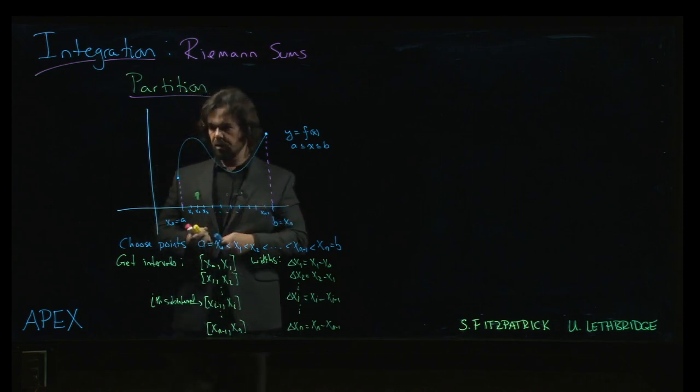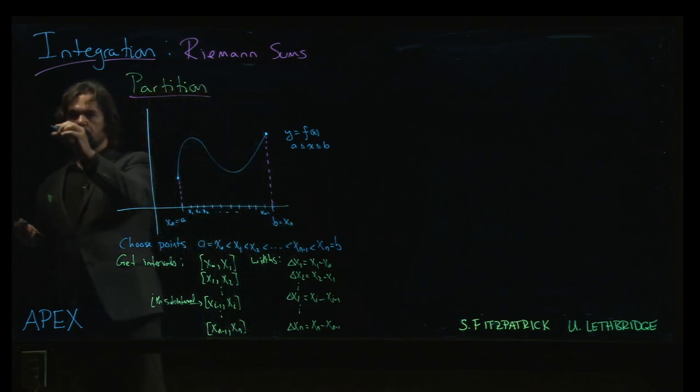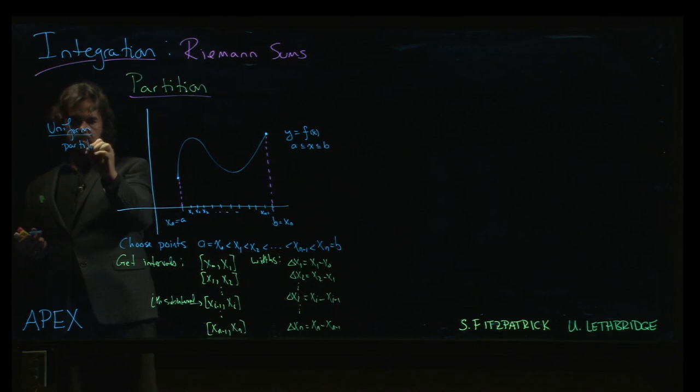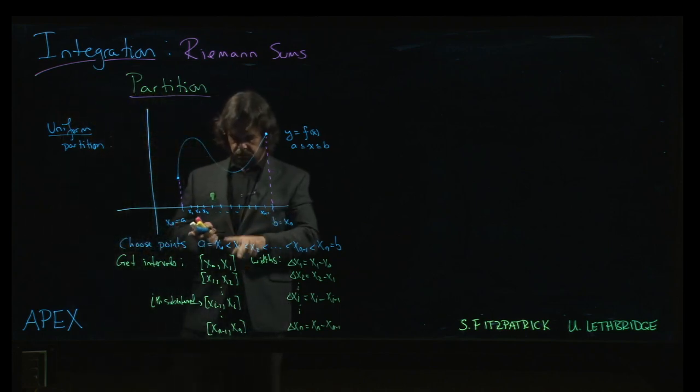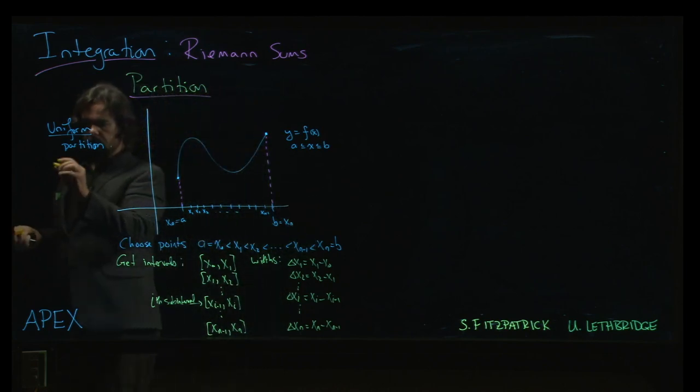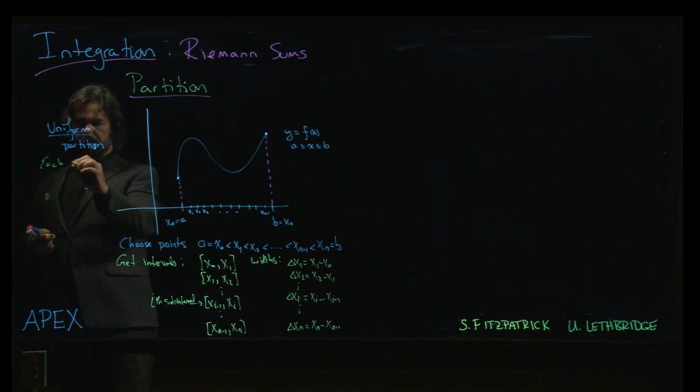Now, usually what we want is a so-called uniform partition. And in a uniform partition, each interval will have the same width. So each of these intervals or subintervals will have width.